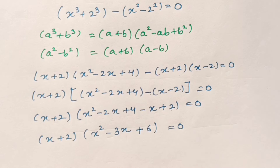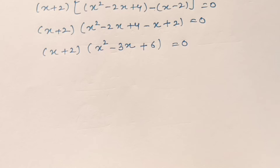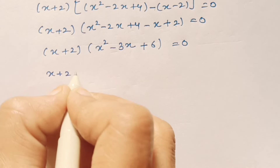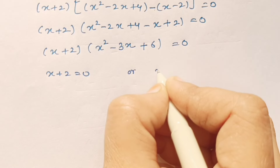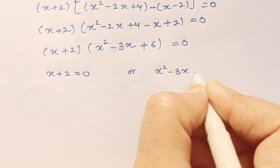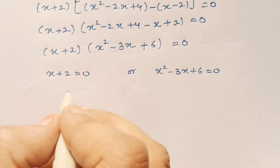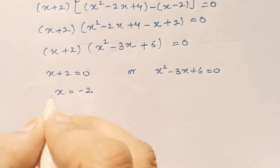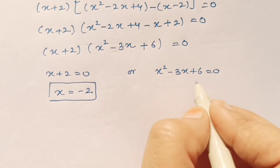Now we have two terms in multiplication equal to 0, so either the first term is 0 or the second term is 0. From x plus 2 equal to 0, we get x is equal to minus 2. So we got the first value of x as x equals minus 2.